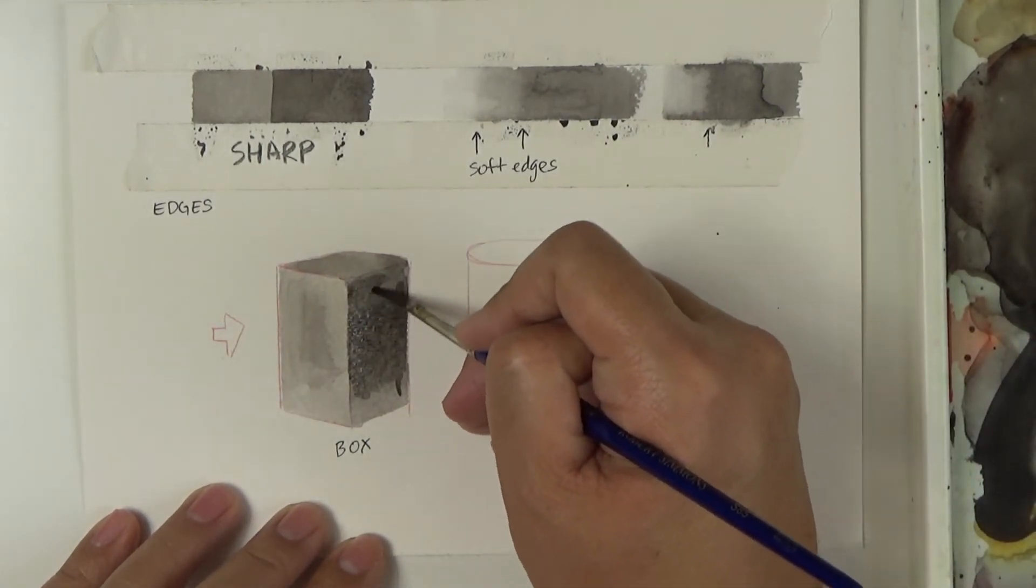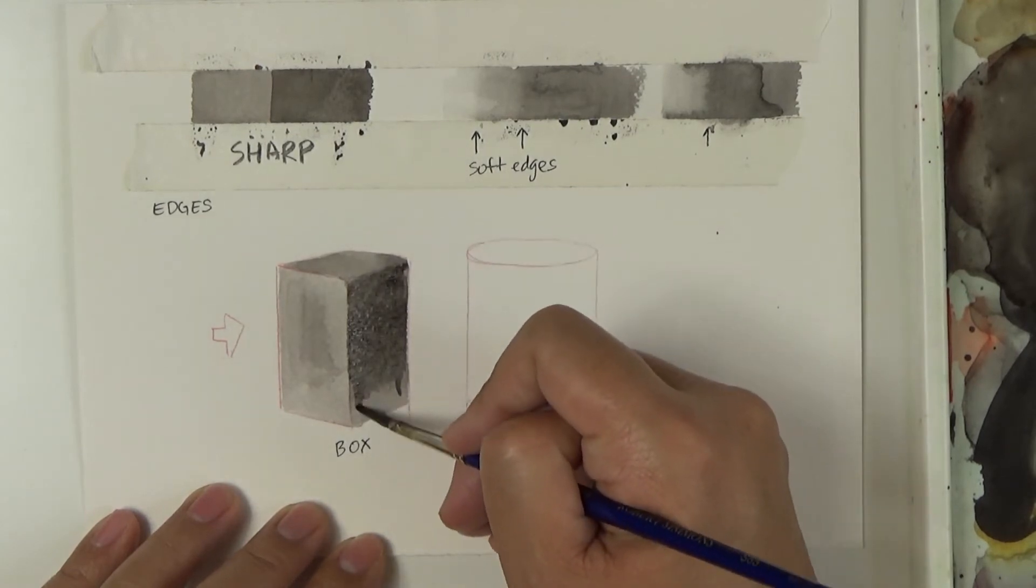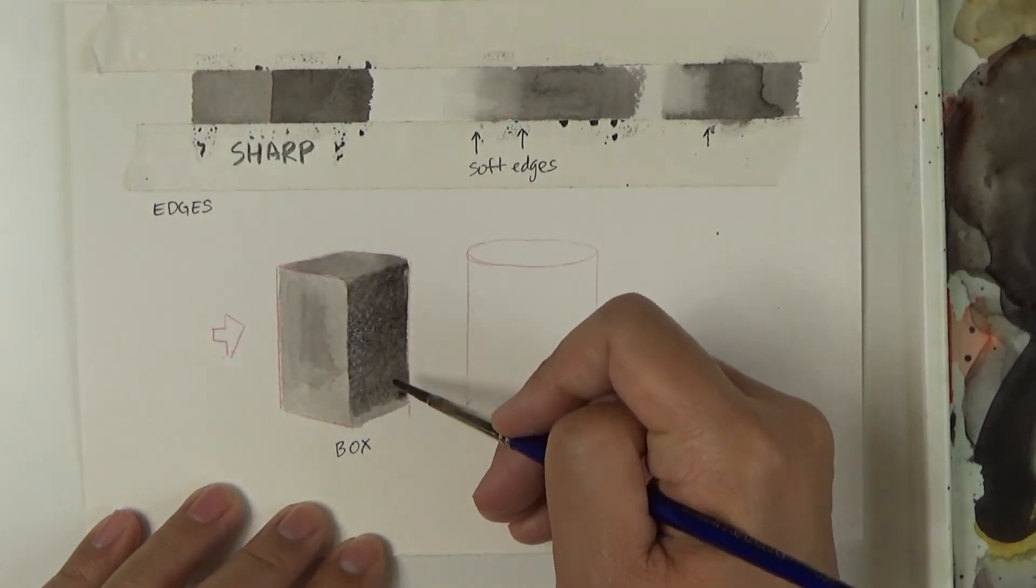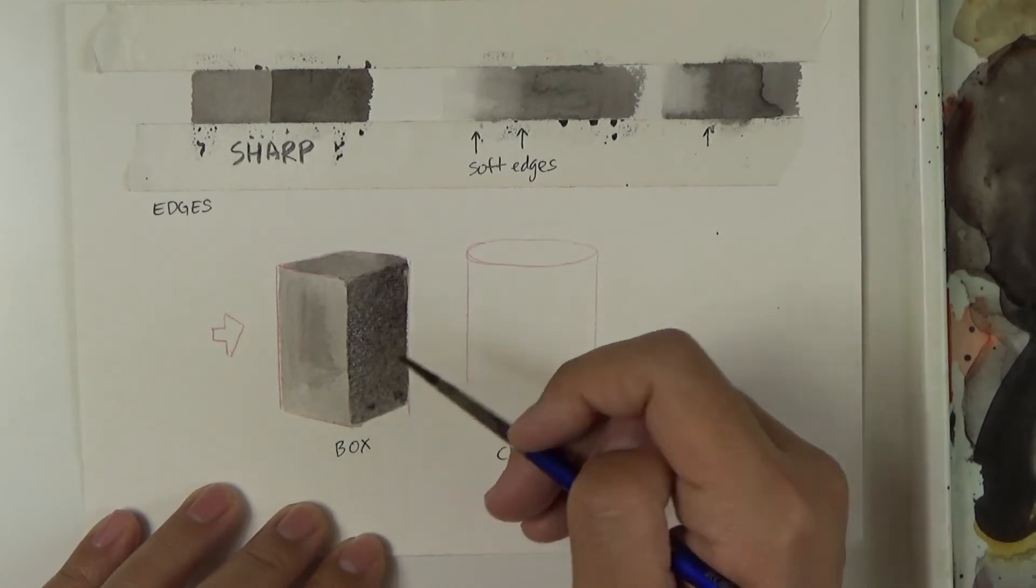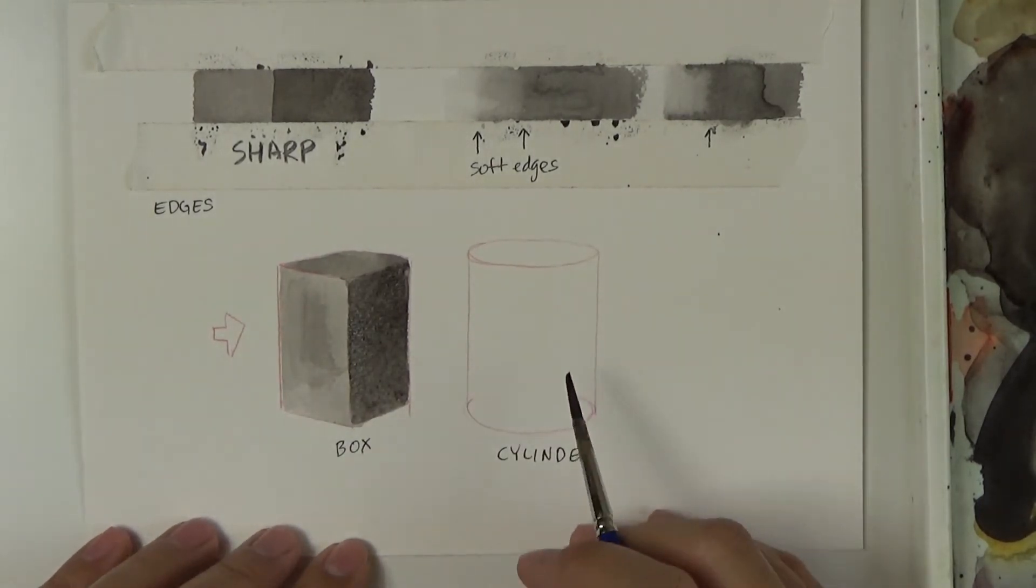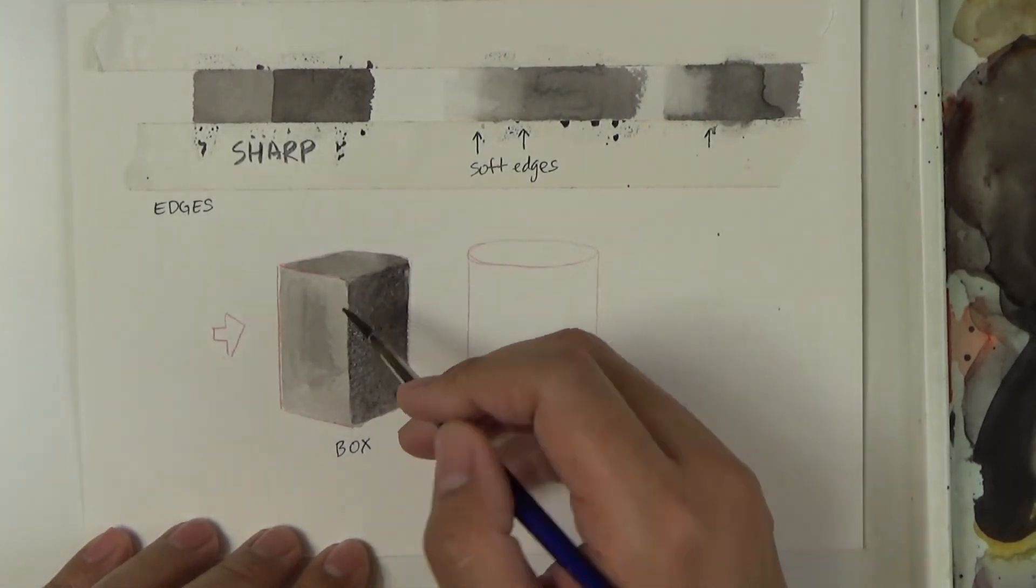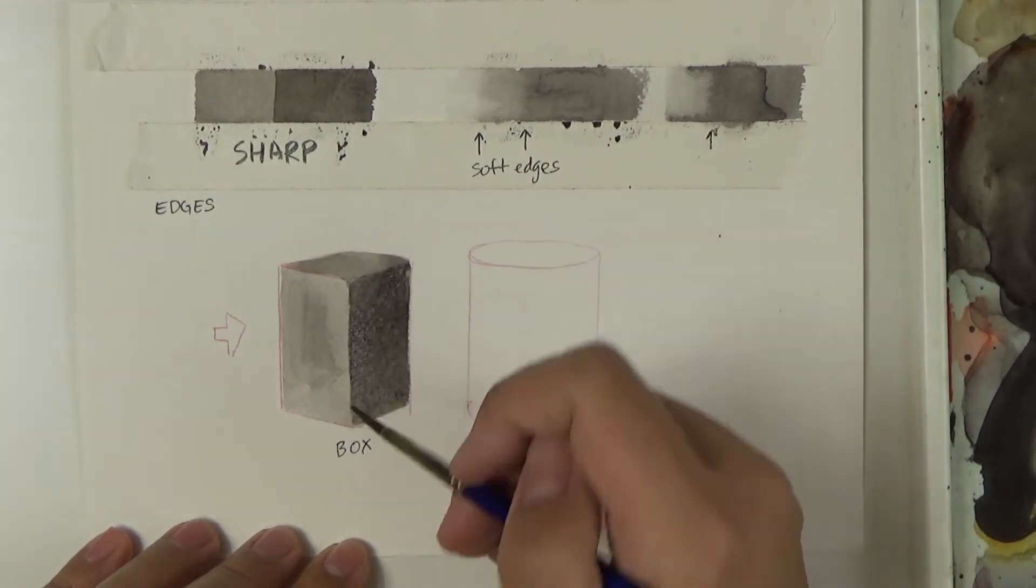And as I add this layer notice how it's getting darker. And more importantly notice how this edge here, it's a very sharp, very crisp edge.